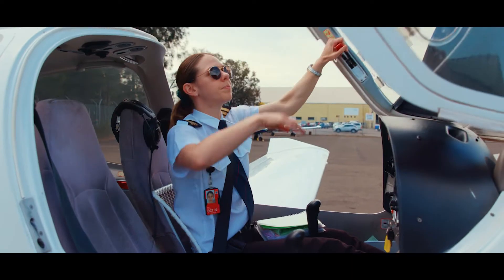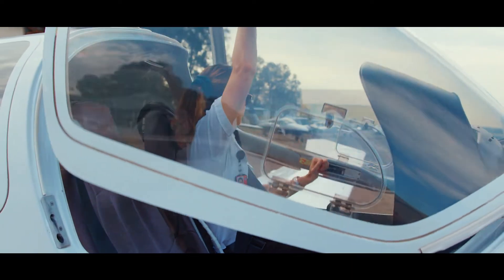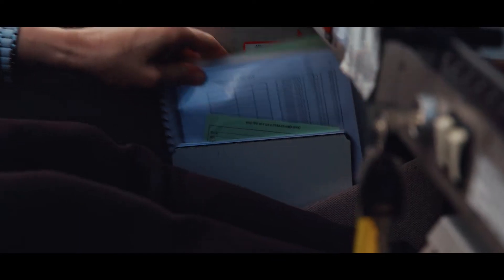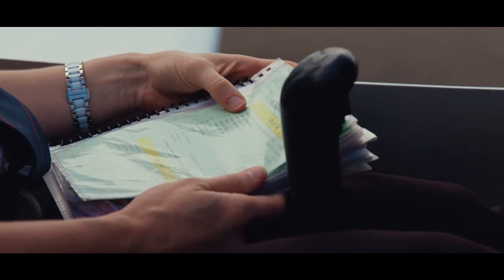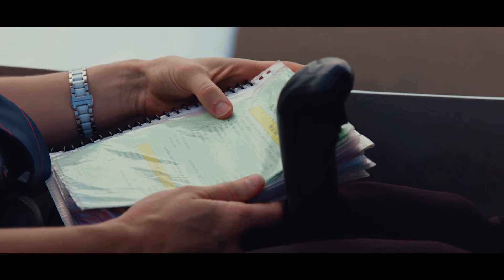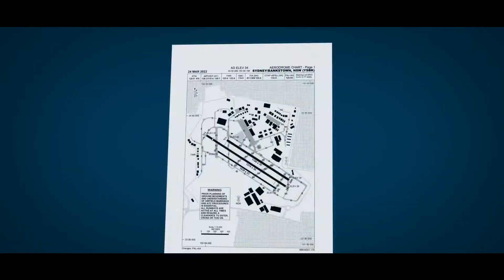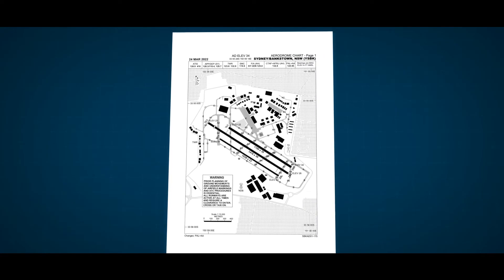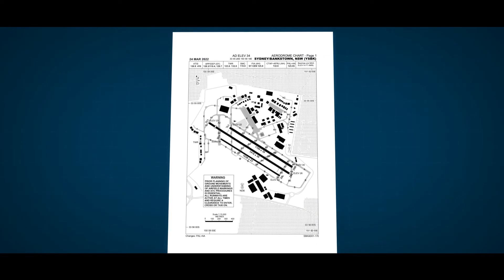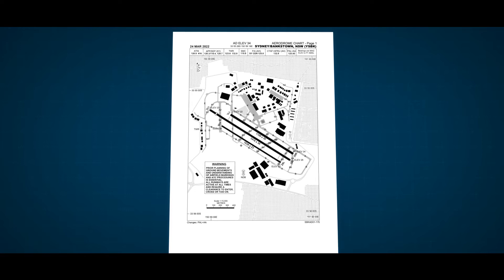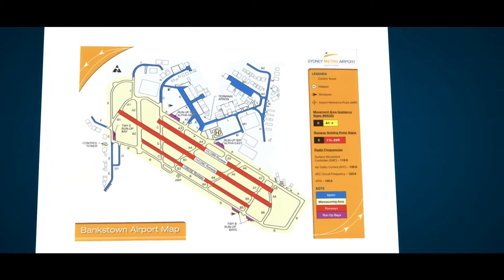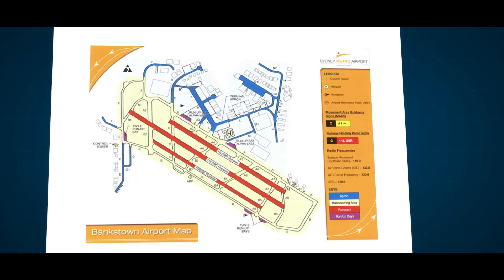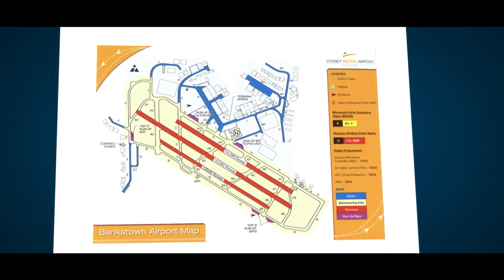Your flight preparation is critical. Ensure you allocate adequate time to fully understand taxiway and runway layouts applicable to your flight. Review the aerodrome chart, familiarising yourself with current local procedures and restrictions, such as those published in the En Route Supplement Australia and Notices to Airmen.